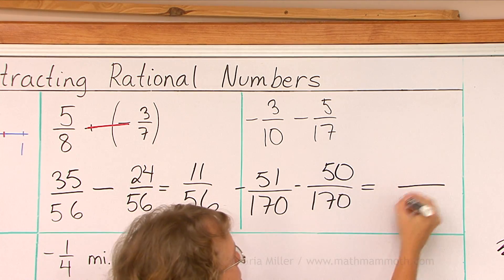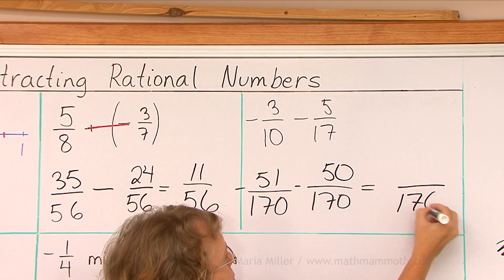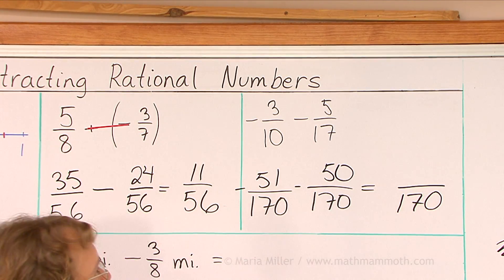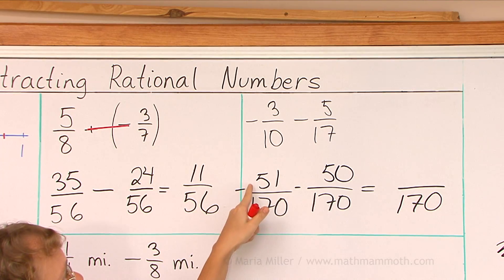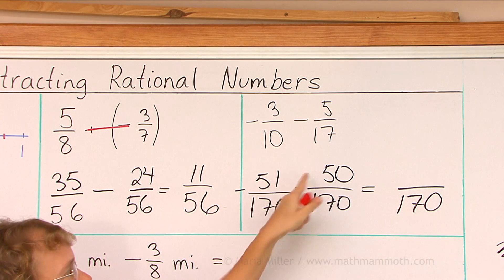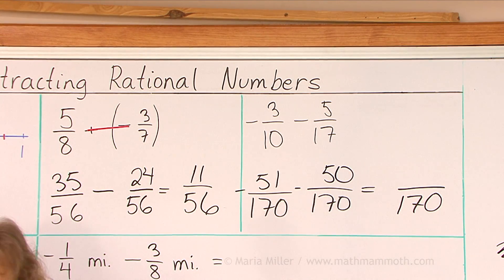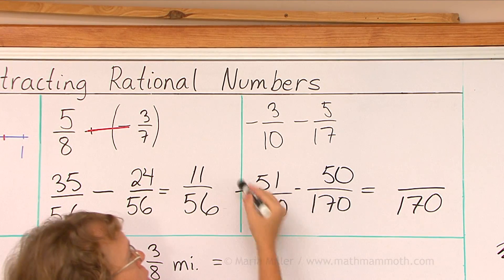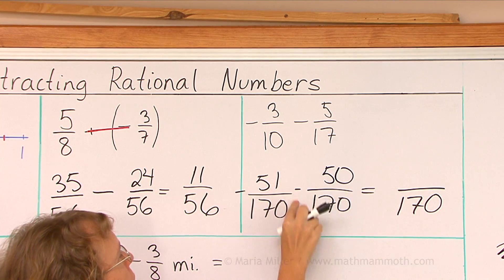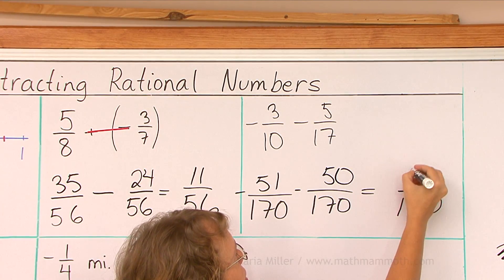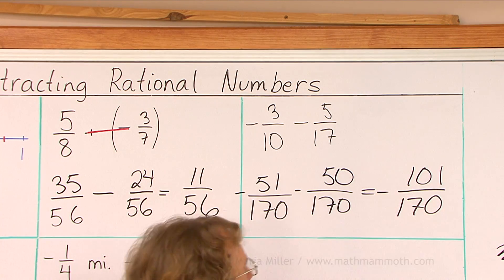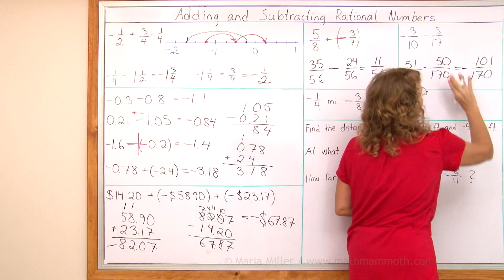Now the final answer will be having a denominator of one-seventy. But what goes on the top, you take negative fifty-one minus fifty. And that is just integer subtraction. We're dealing with integers here in the numerator. You take negative fifty-one minus fifty, which is negative is a more negative. We get negative one-hundred-one. And we'll put the negative right there in front.